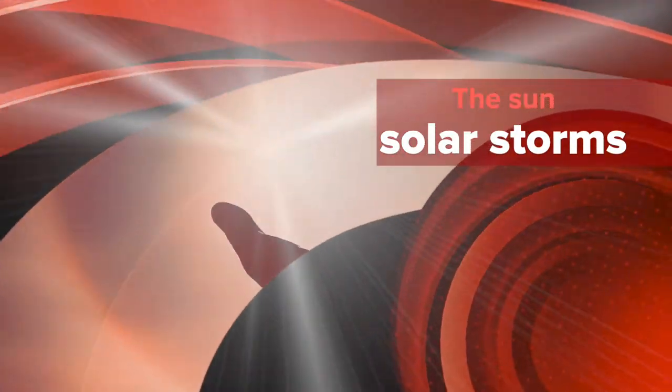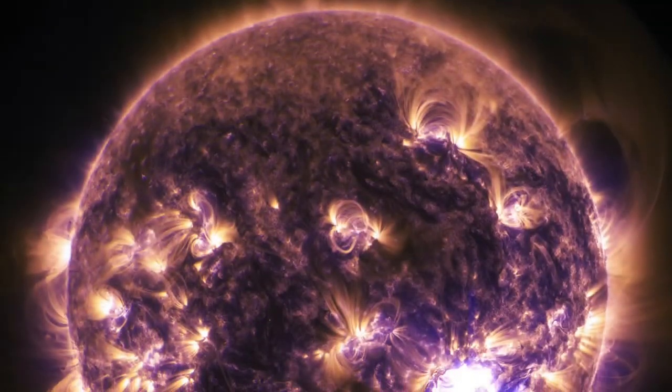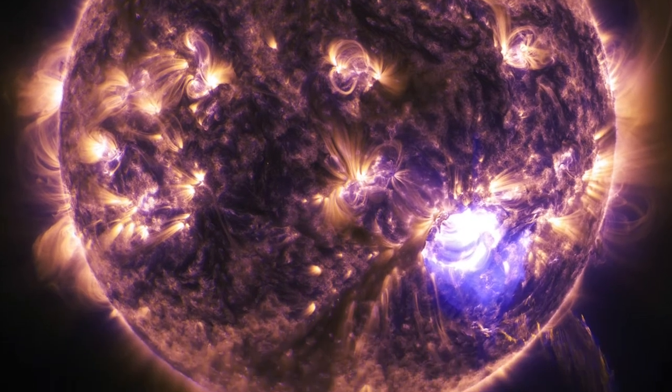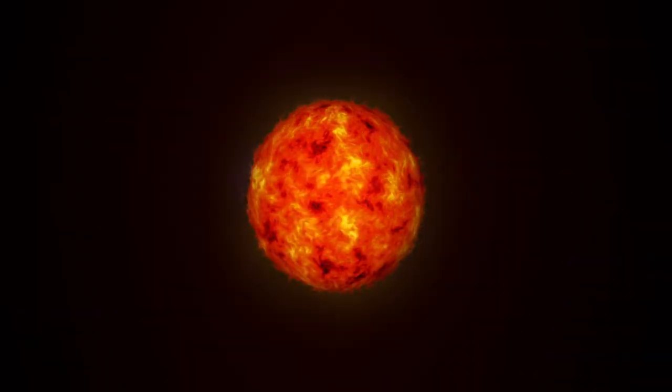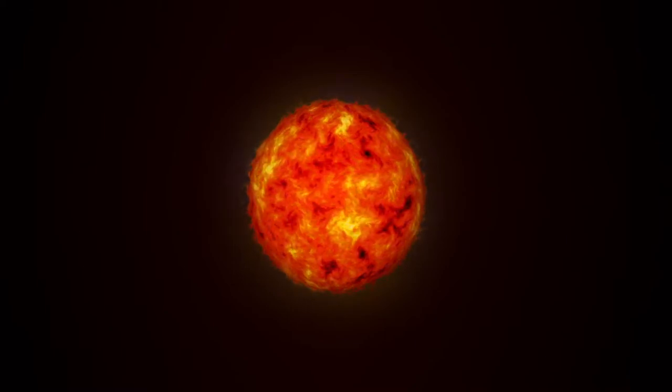The sun is constantly going through cycles that see the number of solar storms increase and decrease. A couple of days ago, a massive solar storm erupted on the surface of the sun that blasted millions of tons of superheated gas off the surface in the direction of Earth.